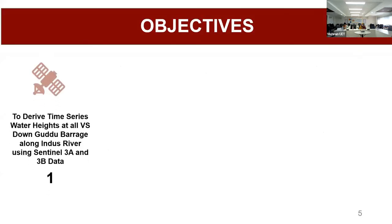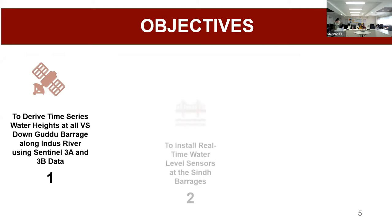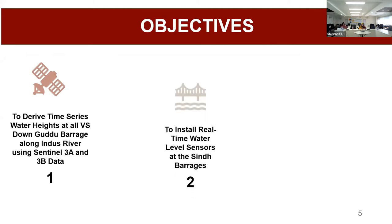We have multiple objectives under this project. The main objective is to derive time series water heights at all virtual stations downstream of Guddu Barrage along the Indus River, using only Sentinel-3A and 3B data. Another objective is to install real-time water level sensors at the Sindh barrages. We have already installed some sensors and are installing more at Guddu Barrage, Sukkur Barrage, and Kotri Barrage.